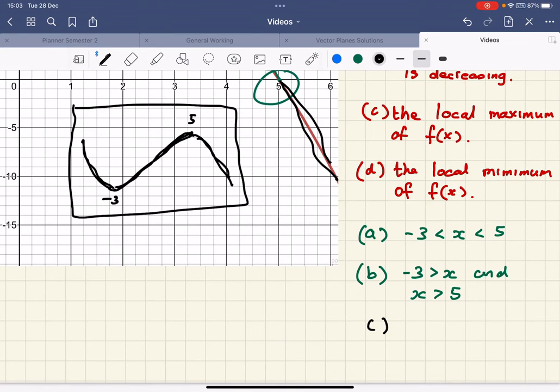Let's put those answers in. For (c), the local maximum is at x = 5, and that means the local minimum is the other place where it cuts across the x-axis, which is -3.